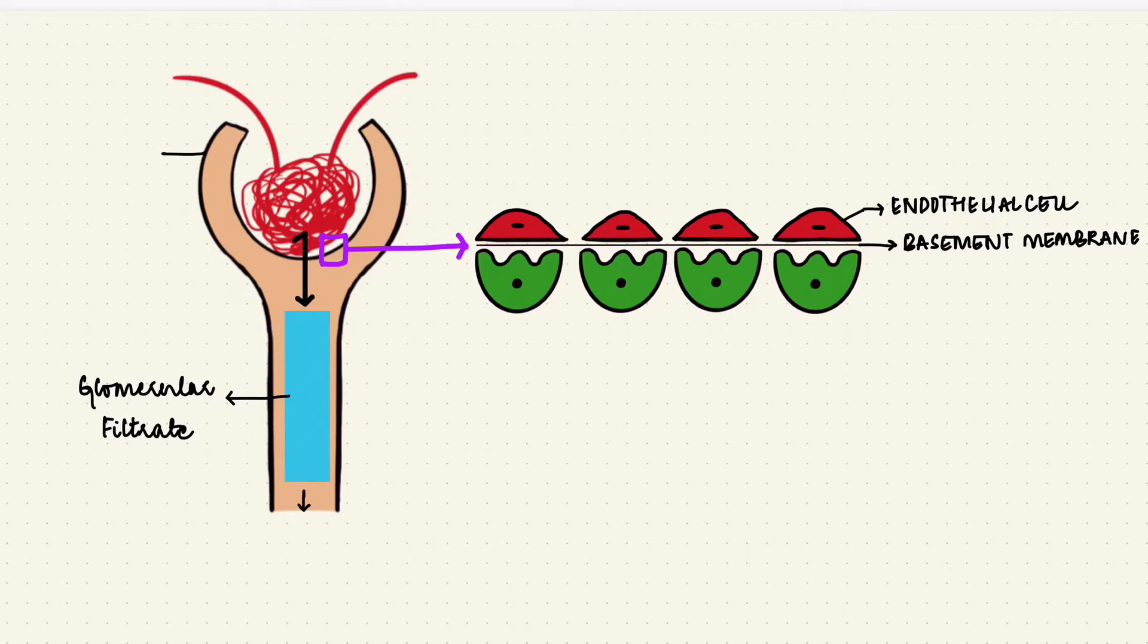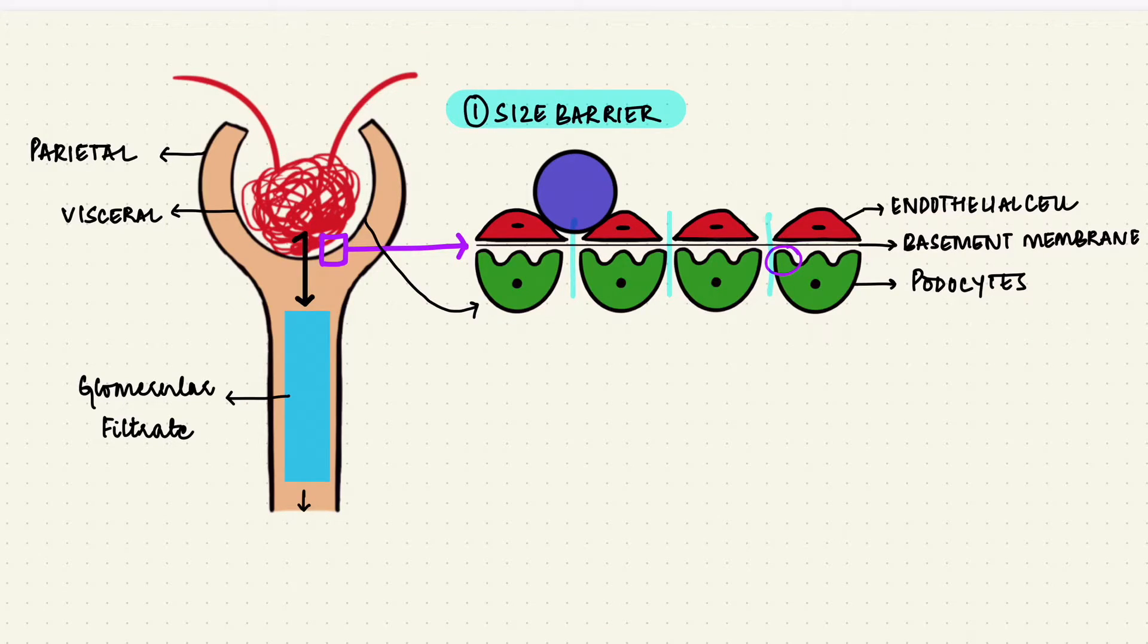The Bowman's capsule has an outer parietal and an inner visceral layer. The visceral layer has specialized cells called podocytes and the podocytes have foot processes. The interdigitation of the foot processes creates spaces again. So obviously it's a size barrier because molecules larger than these spaces can't pass through. But also it's a charge barrier.